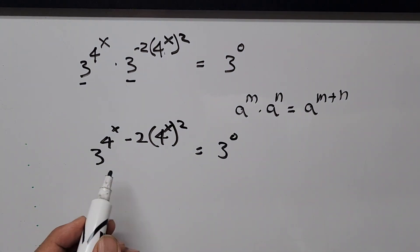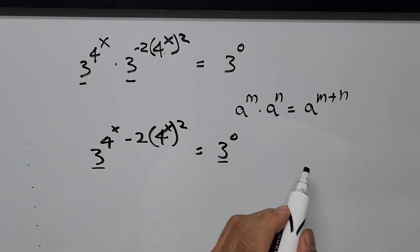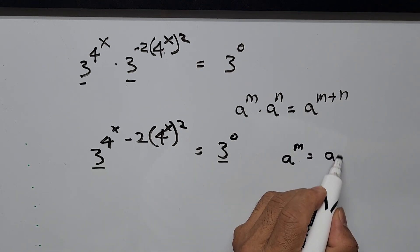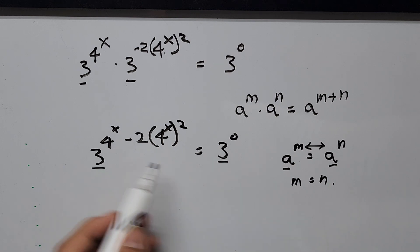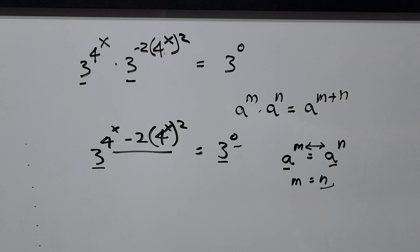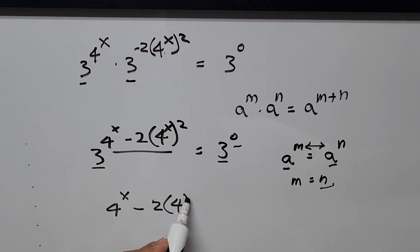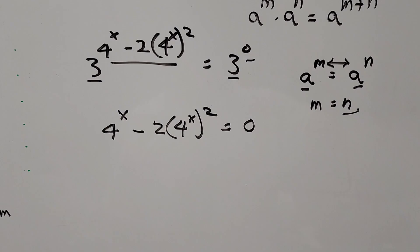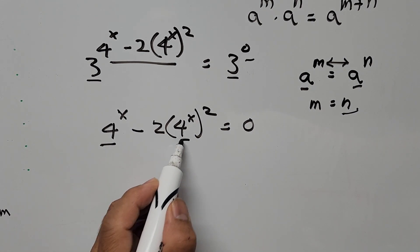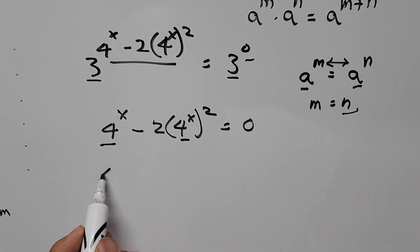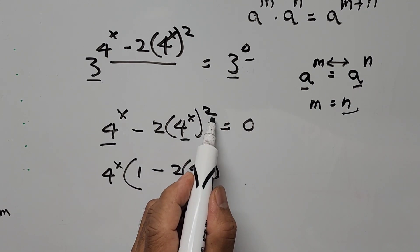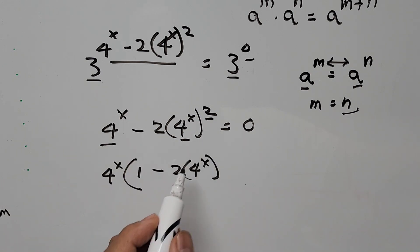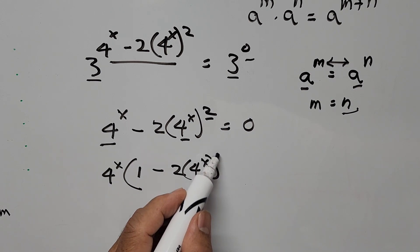Now left and right-hand sides have the same base, so we can equate the exponents. That gives us 4 to the power of x minus 2 times 4 to the power of x squared equals 0. Factoring out 4 to the power of x — since it's common on both terms — we have 4 to the power of x times (1 minus 2 times 4 to the power of x) equals 0, since 4x squared divided by 4x leaves just 4 to the power of x.